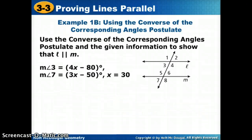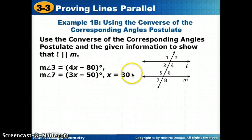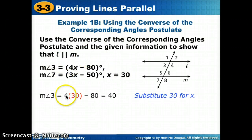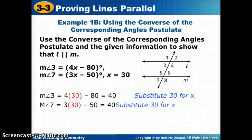Let's try one that's a little tougher and add some algebra to it. We're going to use the converse of the corresponding angles postulate to show that the lines are parallel. But this time, it does not tell us that angles 7 and 3 are congruent, so we have to decide first if they are. They tell us that x equals 30, so we're going to plug x into each of those angle measures. We put 30 in for x in angle 3: 4 times 30 is 120, minus 80 gives us 40. Then we see that 3 times 30 minus 50 also gives us 40 for angle 7.